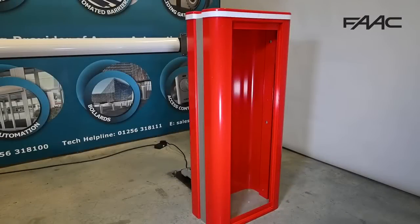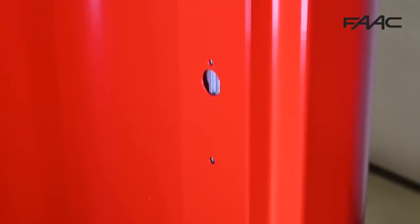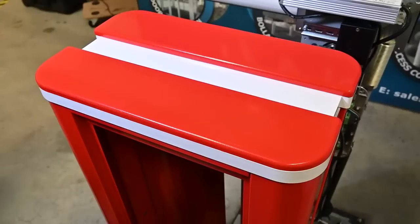This is the barrier housing. These are the entry points for any photo cells you might attach directly to the barrier. Up here you can see the fixing mounts where the traffic lights that you can put into the barrier would be. It would replace this white plastic section. Please remember to fit this before you put the housing on.